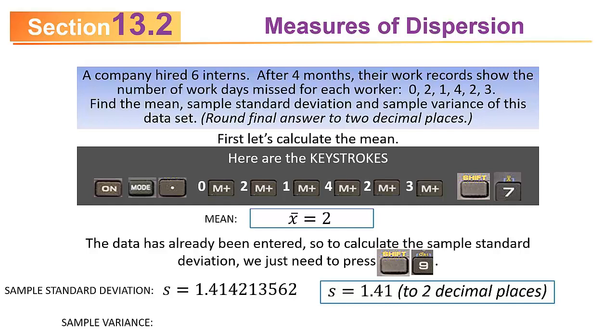If I ask for the variance, you simply square the standard deviation. But remember, you're going to square the number before you round it and then round. So square 1.414213562 and then round it. It turns out to be 2.00 to two decimal places.